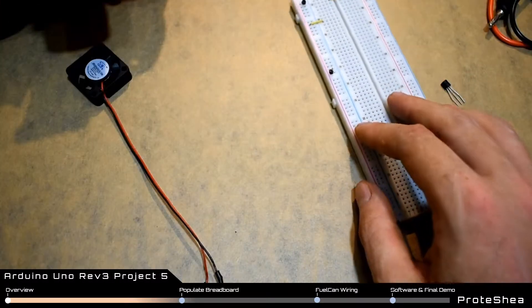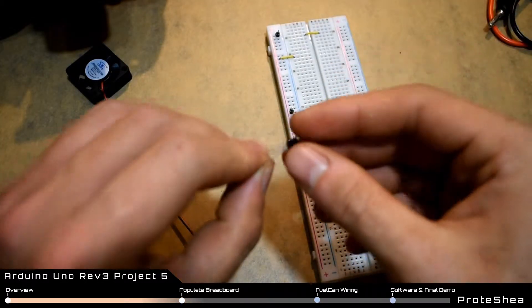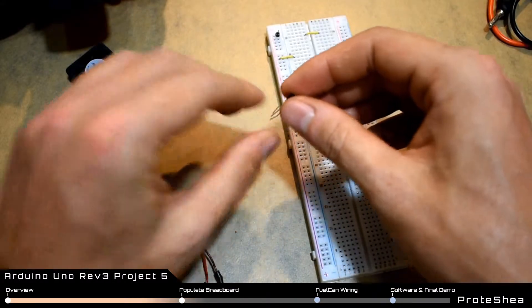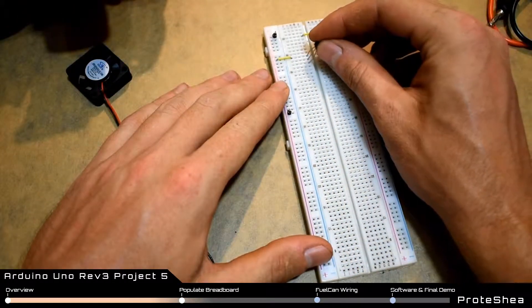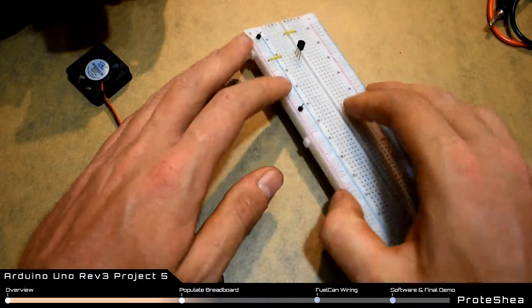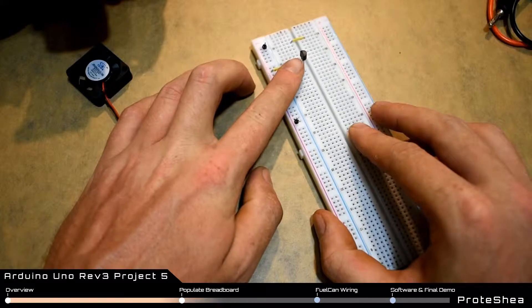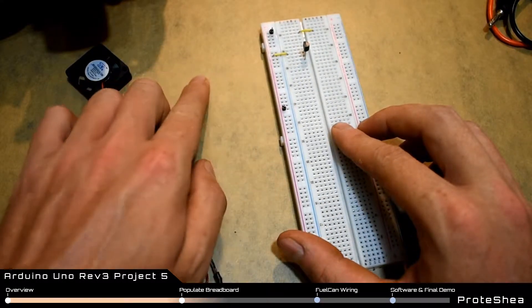We're going to use a solderless breadboard for this project, so go ahead and place the n-channel MOSFET on the breadboard. I have it oriented so that the flat face of the transistor is pointing to the left.